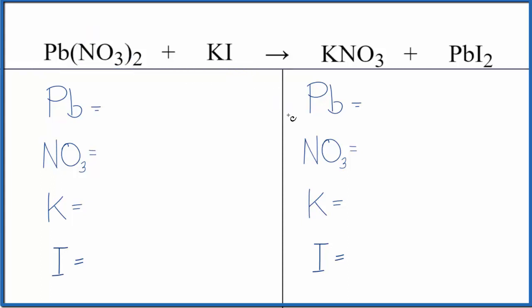So to balance the equation, we're going to use a bit of a trick to make this a lot easier. We have one lead, and then this nitrate, it's a polyatomic ion. We have it here and here. We're just going to count it as one thing.